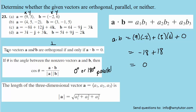We end up with negative 18 plus 18, which is 0. As stated by the first theorem, if the dot product between those two vectors is equal to 0, then they are orthogonal. So for part a, we can definitely say that these vectors are orthogonal or perpendicular.